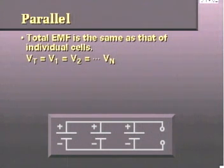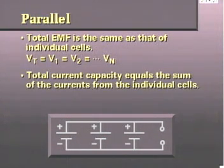And second, since the individual cells are arranged to form more than one current path, the total current equals the sum of the currents from the individual cells.